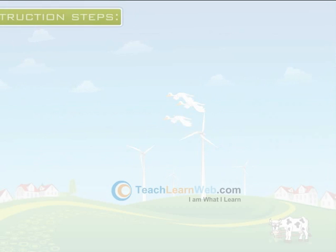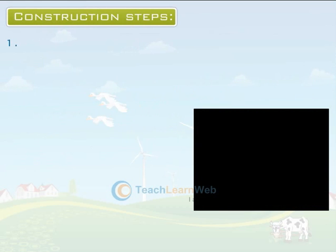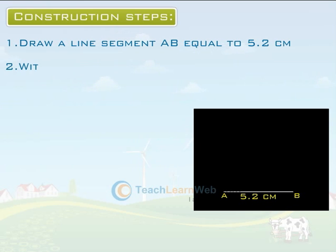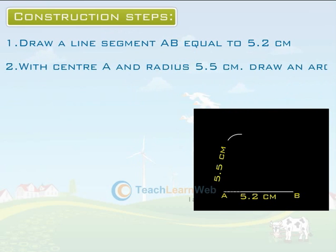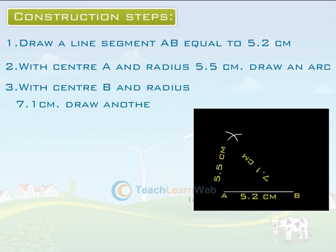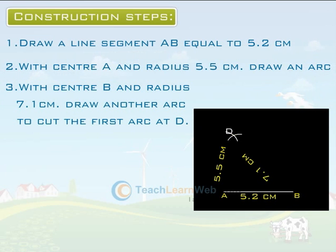Construction Steps. Step 1: Draw a line segment AB equal to 5.2 cm. Step 2: With center A and radius 5.5 cm, draw an arc. Step 3: With center B and radius 7.1 cm, draw another arc to cut the first arc at D. Step 4: Draw AD and BD.